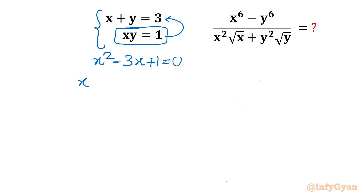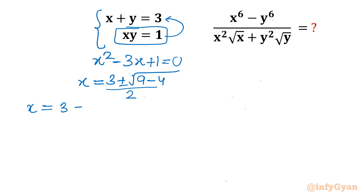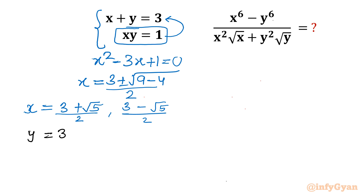Applying the quadratic formula: (3 ± √(9−4)) / 2. So there are two roots: (3 + √5) / 2 and (3 − √5) / 2. If x equals (3 + √5)/2 then y will be the conjugate (3 − √5)/2.